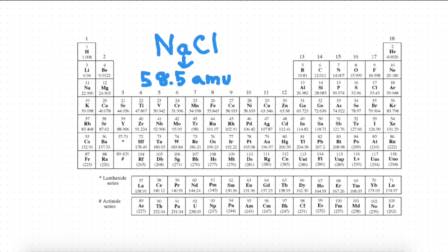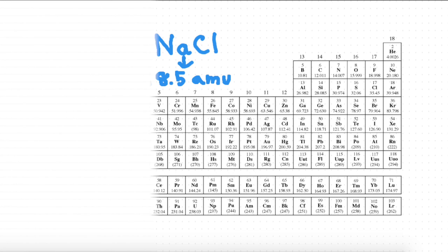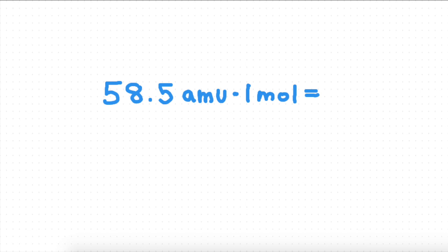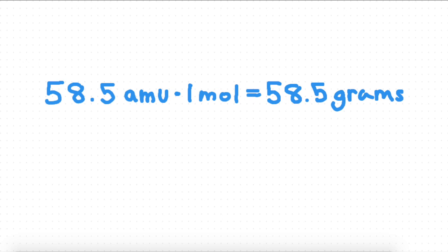Now here's where the mole comes into play. If we take 58.5 AMU and multiply that by one mole, we get 58.5 grams. This is so big because now we turn units of AMU, which we can't even see, into grams, which we can even feel.